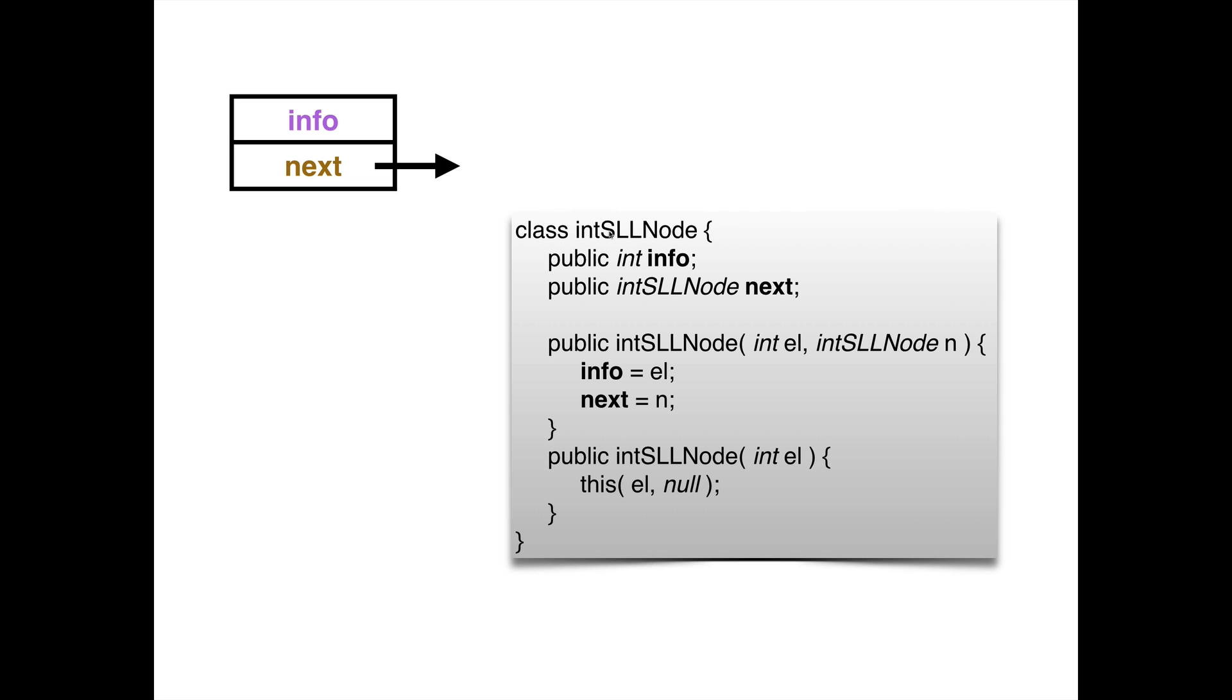And this is how it's declared. It's a class. It has two fields, info and next, and two different constructors. You can either construct one of these new cells with an integer and then a reference to another element of the list. Or you can create it with just passing an integer, in which case the next reference is going to be null.